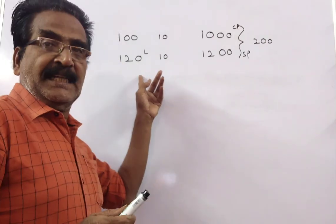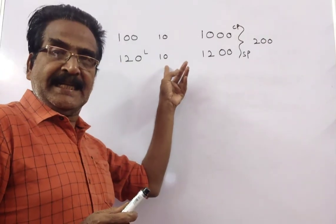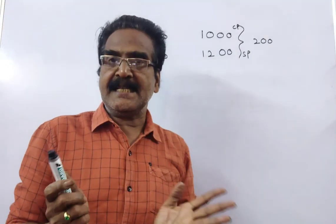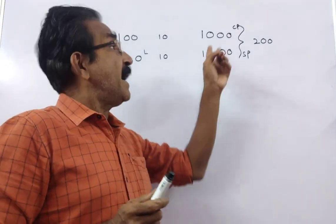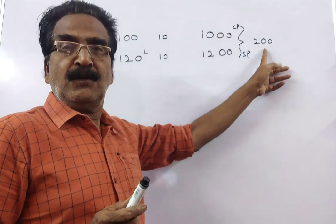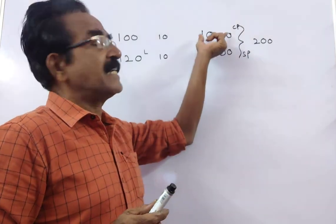If he sells this 120 liters at rupees 10 a liter, he realizes 1200 rupees, a profit of rupees 200—1200 minus 1000.